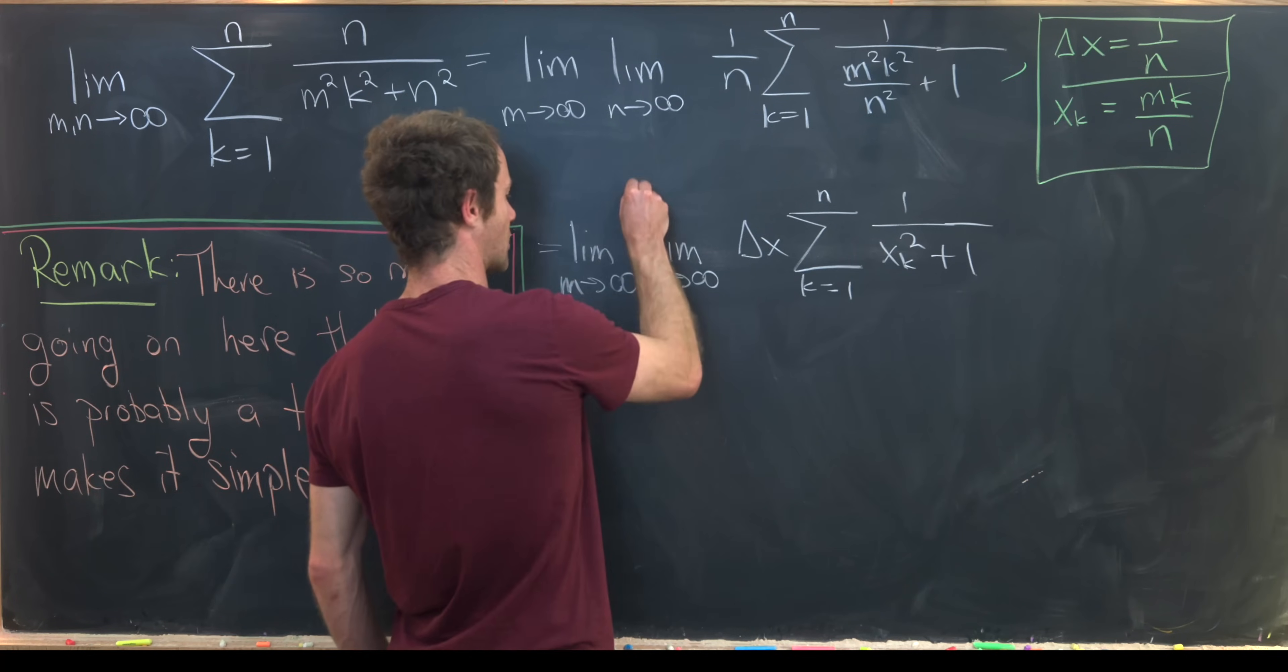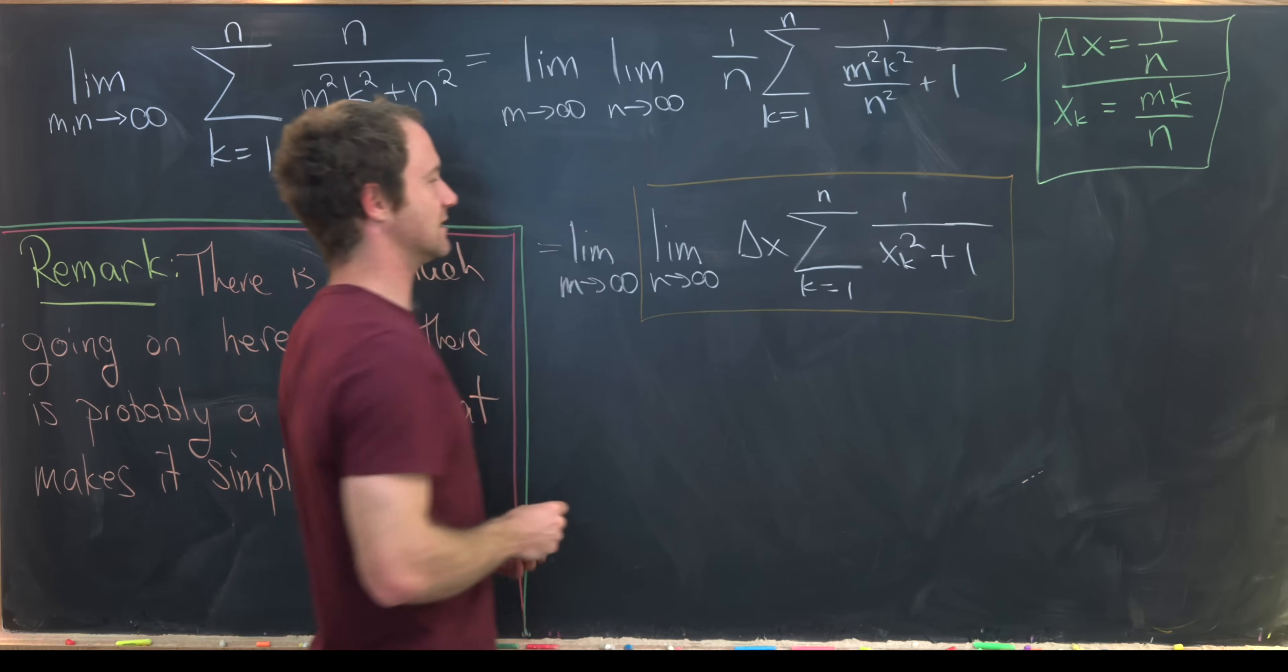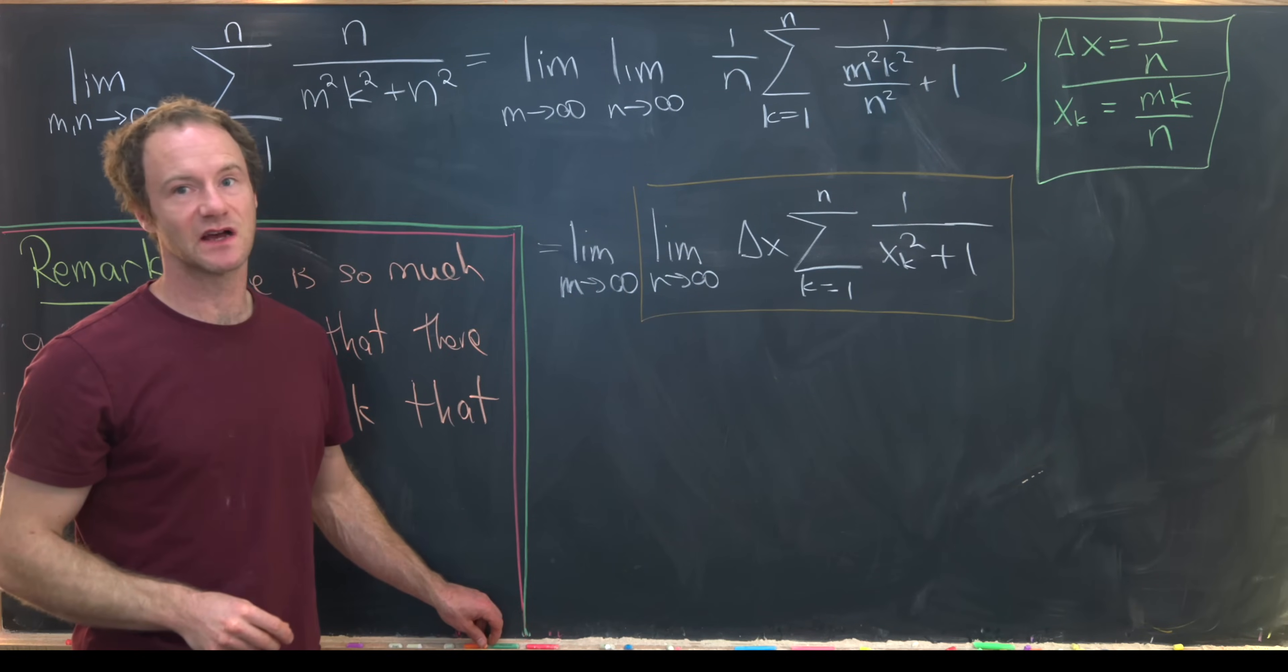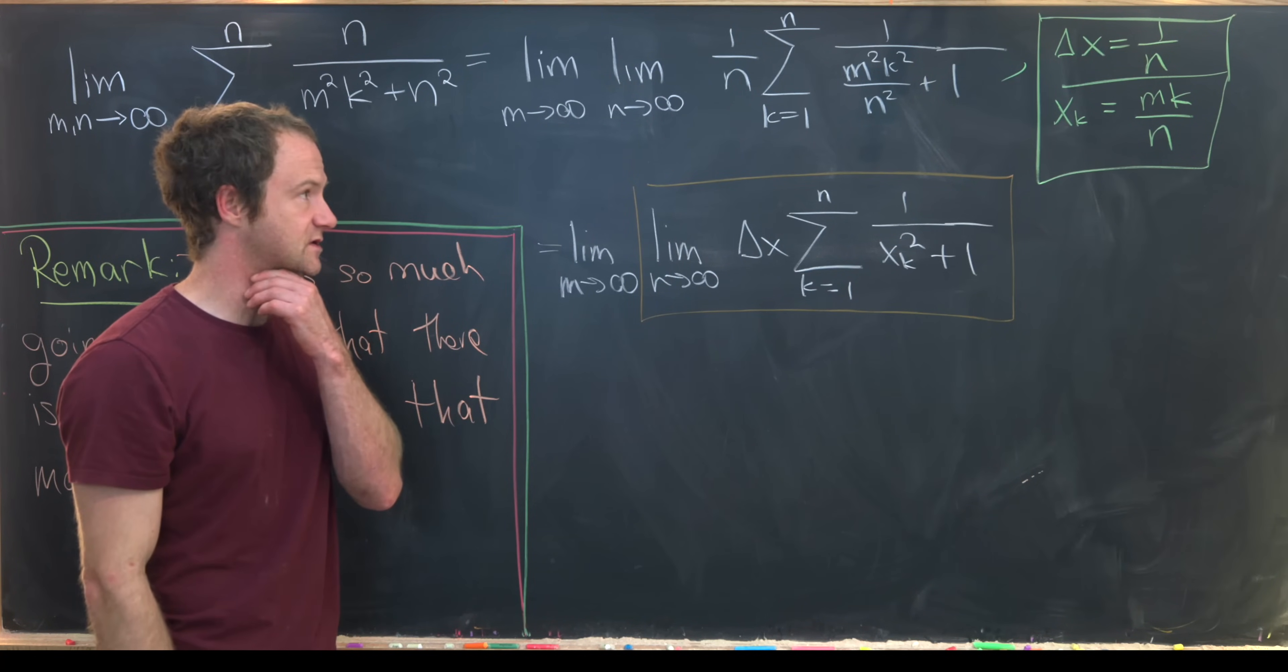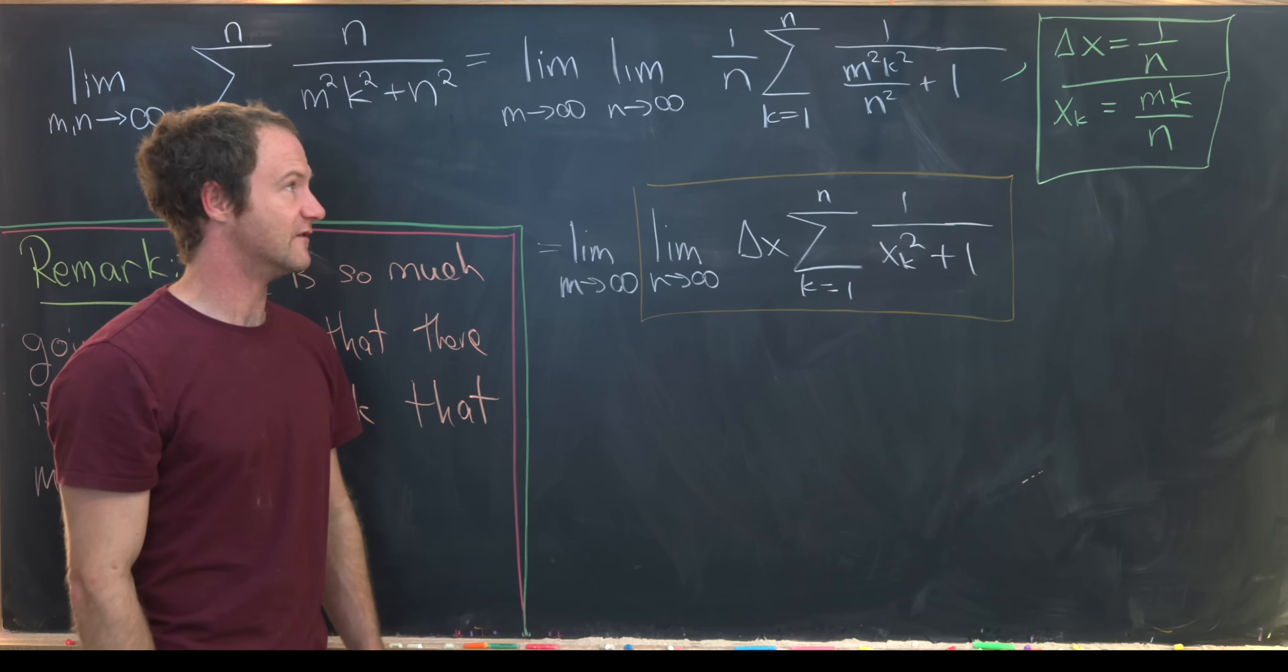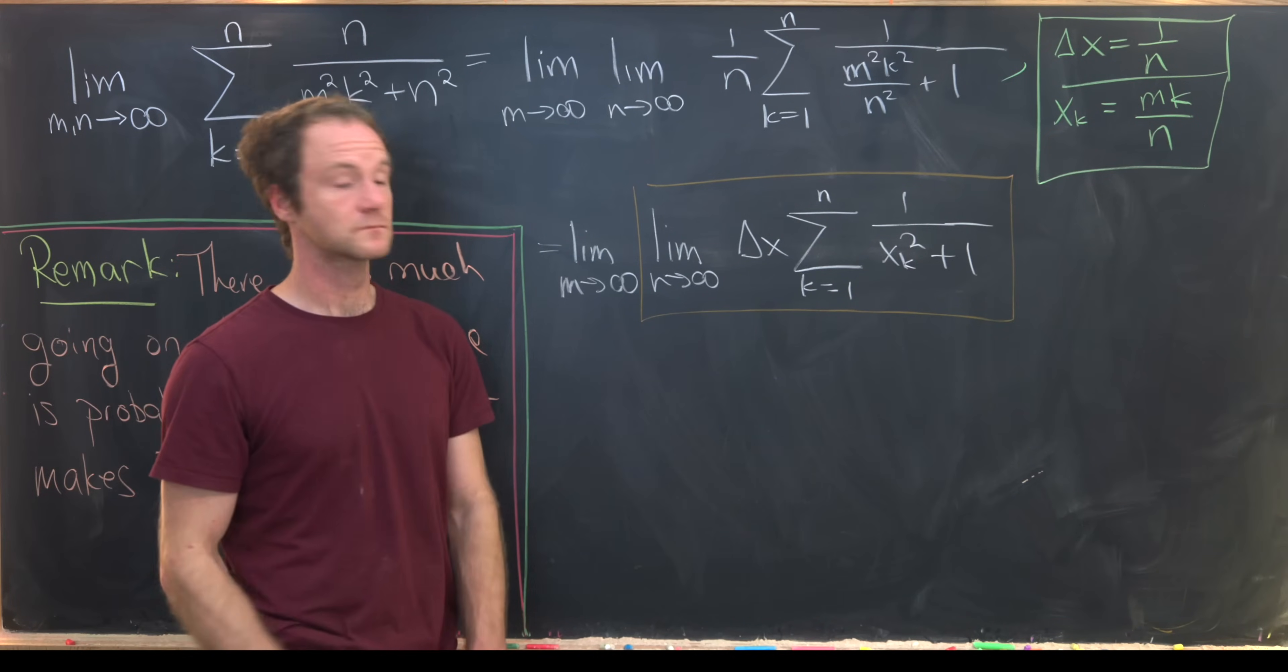This bit which I have an orange box around is most definitely the limit of a Riemann sum, which means it can be rewritten as a definite integral. The real question is what are the endpoints of this definite integral.